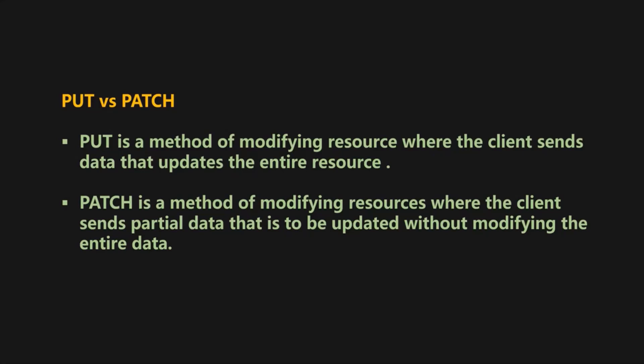When we use the PUT HTTP method to update a resource, we need to send the entire object which we want to update with the request body. But with the PATCH HTTP method, we only send a partial object with the updated property values in the request body.